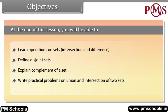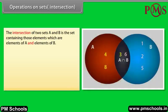Operations on sets — Intersection. The intersection of two sets A and B is the set containing those elements which are elements of A and elements of B. We use this symbol for intersection.